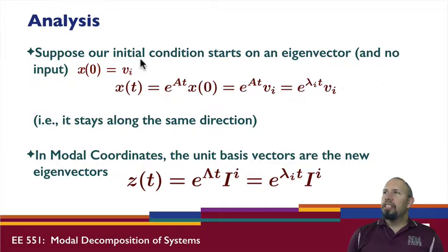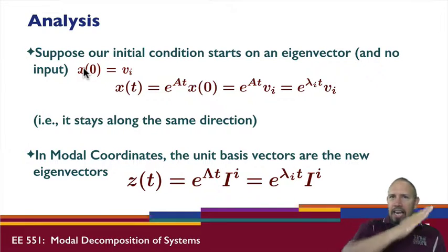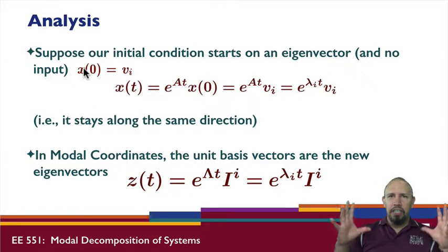Now suppose our system starts with initial condition that's an eigenvector. An eigenvector, if we take that same vector and multiply by a constant, is still an eigenvector. This can be any vector along the same direction. If you think of what an eigenvector is in n-dimensional space, it's like a line. The eigenspace associated with that eigenvalue is just a line in that space.